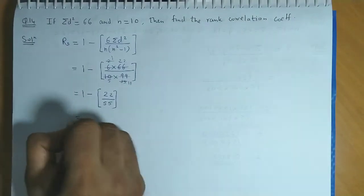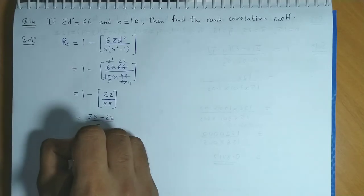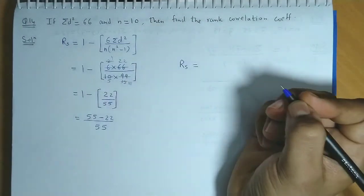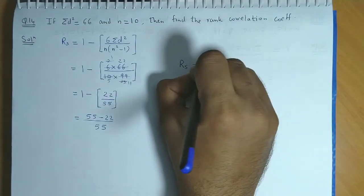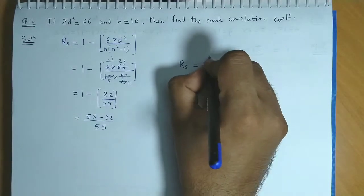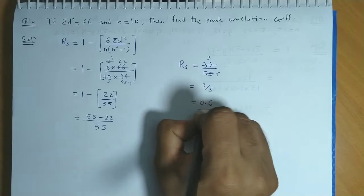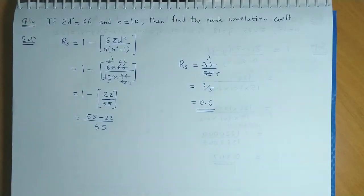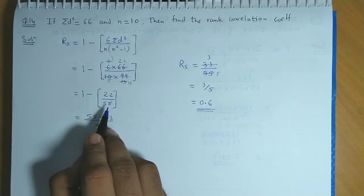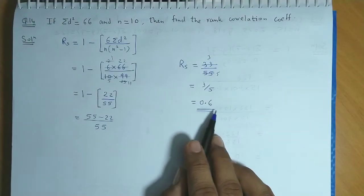Now, if we equalize the denominator, we have 55 minus 22 upon 55. So the value of rs will be 33 divided by 55, which is 11, 3s are 11, 5s are, so that is 3 by 5. And the answer is 0.6. The final answer is 0.6.